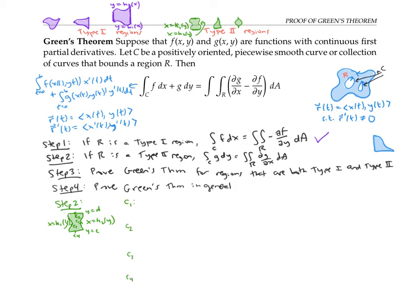C₁ will be parameterized by the copycat parameterization: y equals t, x equals k₂(t). C₂ at the top — I'll parameterize negative C₂ with x equals t, y equals d. C₃ — I'll parameterize negative C₃ with y equals t, x equals k₁(t). And C₄ is parameterized with x equals t, y equals c.